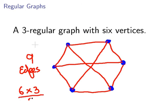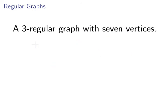All together there are nine edges, because there are six vertices each with a degree of three, and dividing that by two we get nine edges.